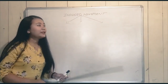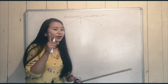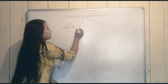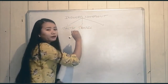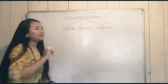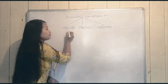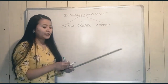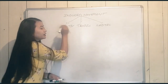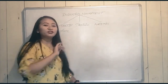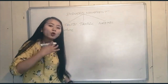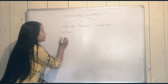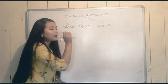In induced movement, we can see three types: tactic movement, tropic movement, and nastic movement. What is tactic movement? Tactic movement is the movement of the whole plant body. It is also called movement of locomotion.